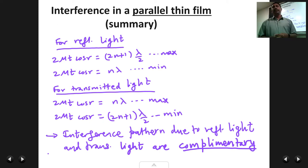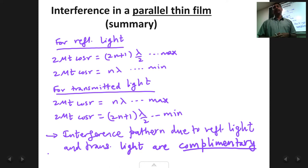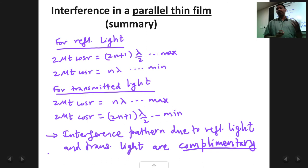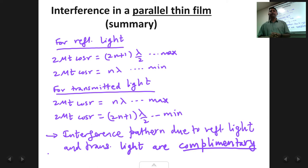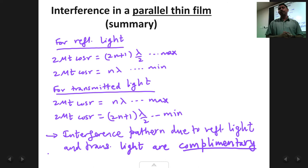With this we finish interference in a parallel thin film. Note that the full derivation for transmitted light is an assignment for you to do. We have now covered both reflected and transmitted light. We will next proceed to the second type: interference in a wedge-shaped film. We are going to do three types of films: parallel film, wedge-shaped film, and circular film — which gives rise to Newton's rings. That will be done in the next class.